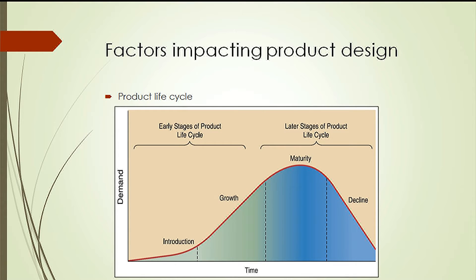Another factor in product design is the stage of the life cycle of the product. Most products go through a series of stages of changing product demand called the product life cycle. The first two stages can collectively be called the early stages, because the product is still being improved and refined and the market is still being developed. The last two stages can be referred to as the later stages, because here both the product and the market are well defined.